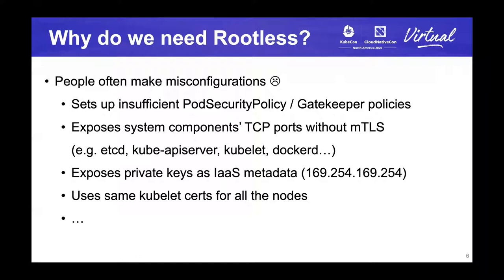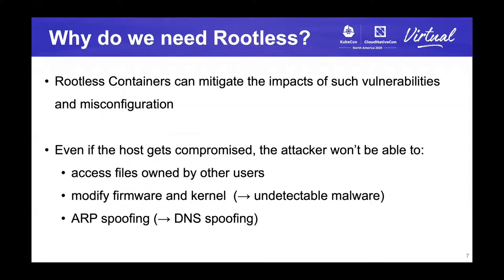And users often make misconfigurations. They may try setting up pod security policy, gatekeeper, or other kinds of admission controllers, but setting it up properly isn't straightforward. And some people still expose the TCP ports of system components such as kubelet and dockerd to the internet without mutual TLS authentication. Or even if they could manage to set up TLS, sometimes they make mistakes about the private keys, such as exposing the keys as IaaS metadata that is accessible by any container in the cluster. So rootless containers is useful for mitigating the impact of such vulnerabilities and misconfigurations.